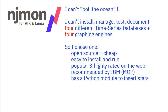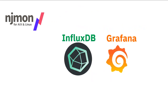So I need to choose one to demonstrate the power of njmon data. My criteria: it needs to be open source — that's cheap, that's good. Easy to install and run, so I don't waste time on management. I like a popular one that's highly rated on the web. It was recommended by the IBM Montpellier team in France, who use it quite a lot. And as a Python programmer now, I wanted a Python module to insert the data into the database. The winners are InfluxDB and Grafana.